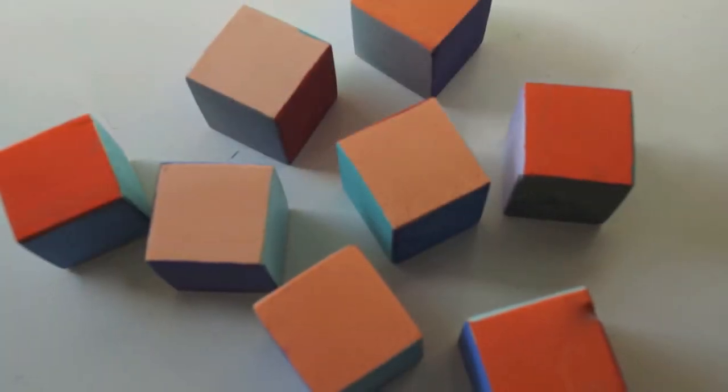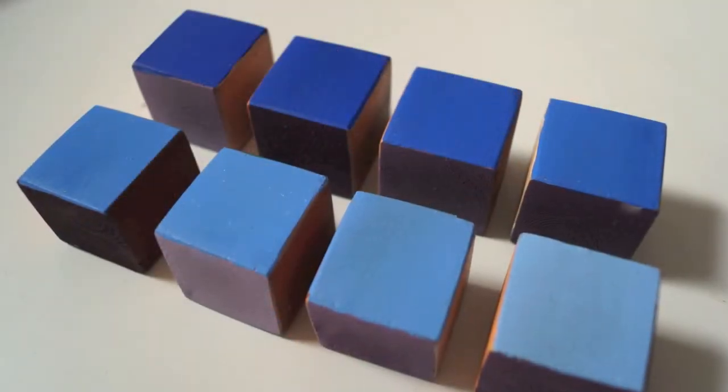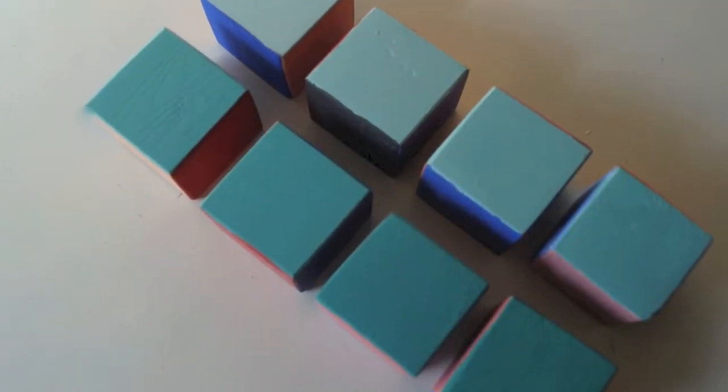A cube has six sides so six colors can be used in a single block. One side blue, one side orange, one side teal, etc.